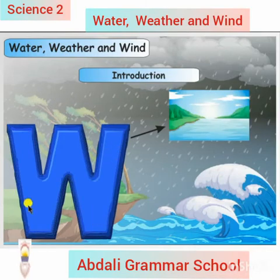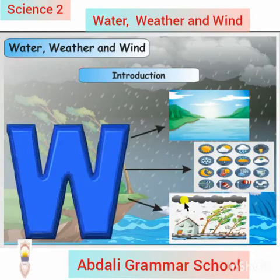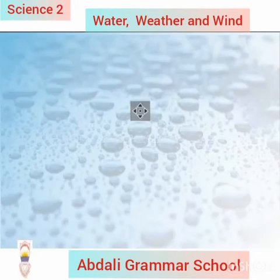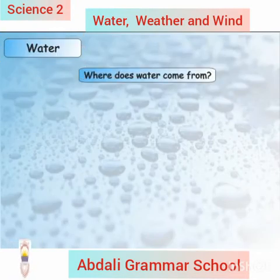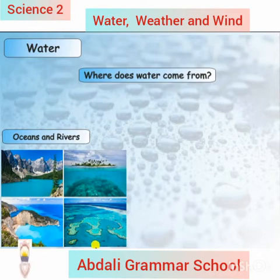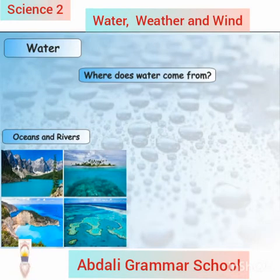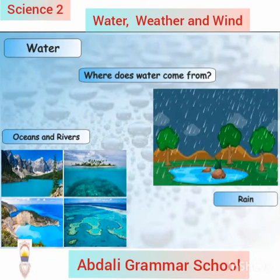They are water, weather, and wind. Water — where does water come from? Water is all around us. Do you know where it comes from? If you think from the oceans and rivers, then you are right. But how does it get into the oceans and rivers?